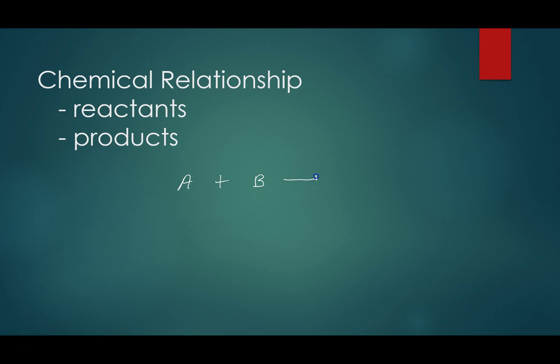If we look at a generic chemical reaction, A plus B gives C, the reactants are on the left-hand side. The arrow means we have a chemical reaction taking place, and the product or products are on the right-hand side.